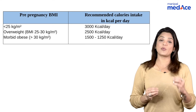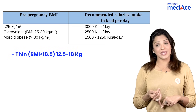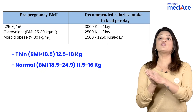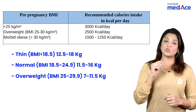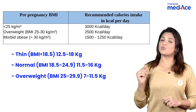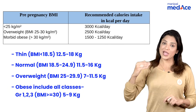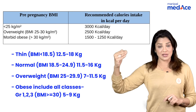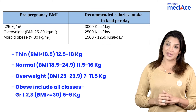The amount of weight gain will also depend upon the pre-pregnancy BMI. BMI less than 18.5 — thin patients — can gain up to 12.5 to 18 kg. Normal BMI patients between 18.5 to 24.9 can gain up to 11.5 to 16 kg. Overweight patients between 25 to 29.9 BMI can gain up to 7 to 11.5 kg. Morbidly obese patients with BMI above 30 should not gain more than 5 to 9 kg.